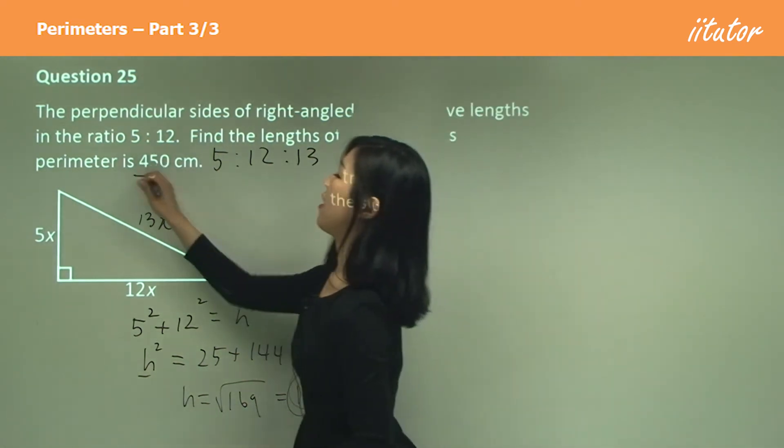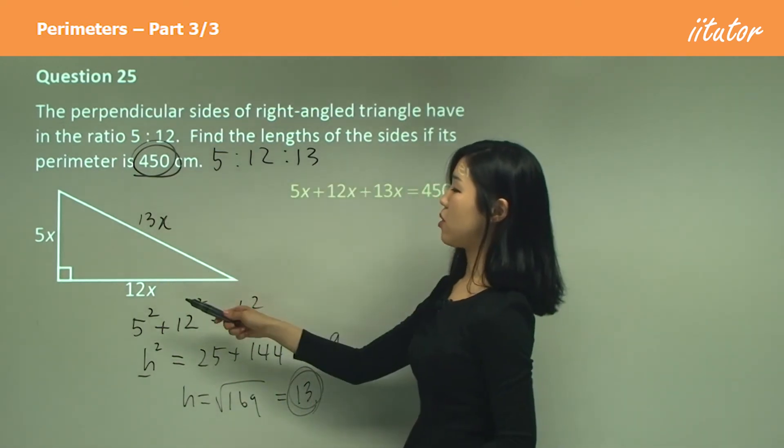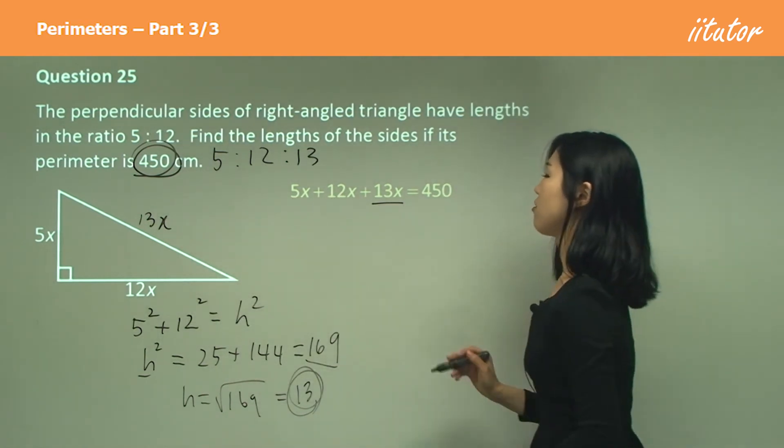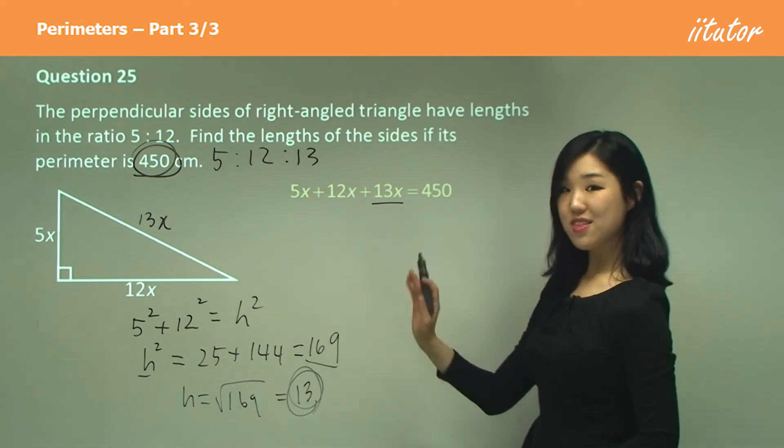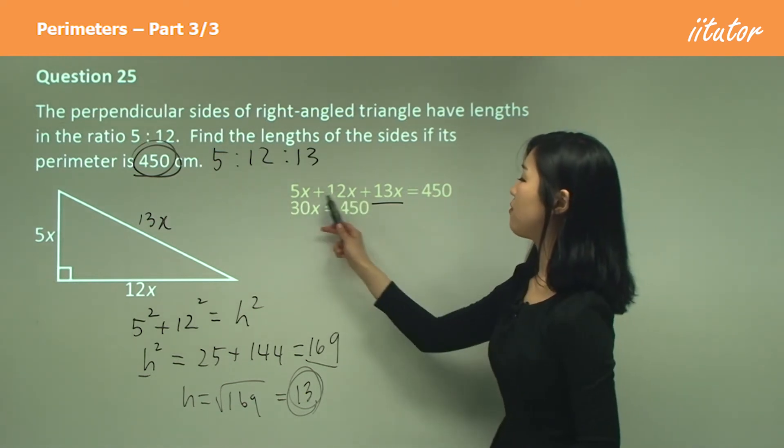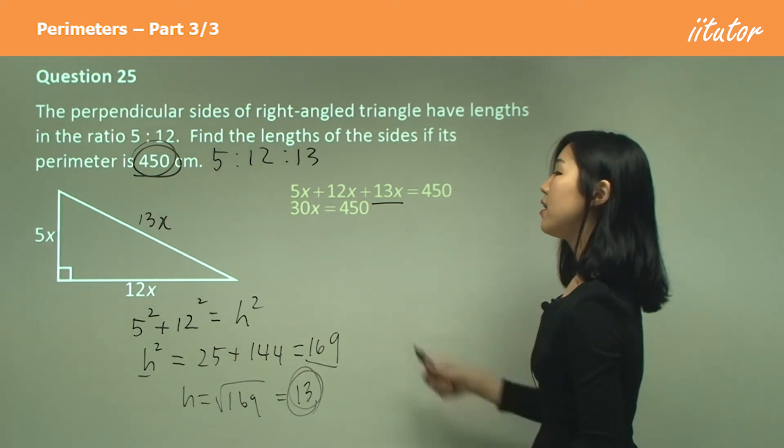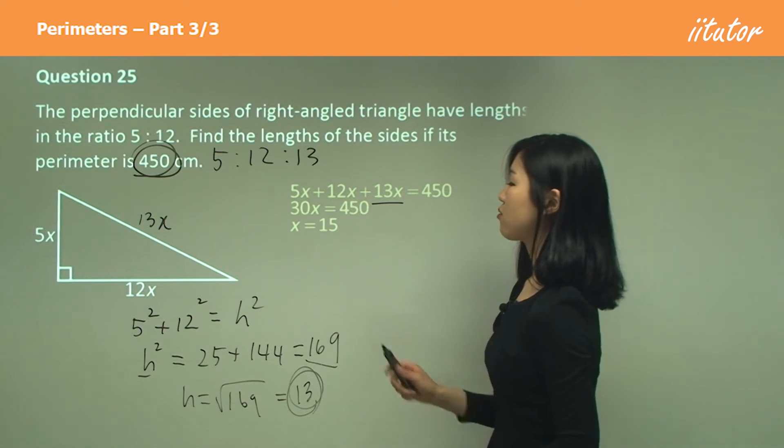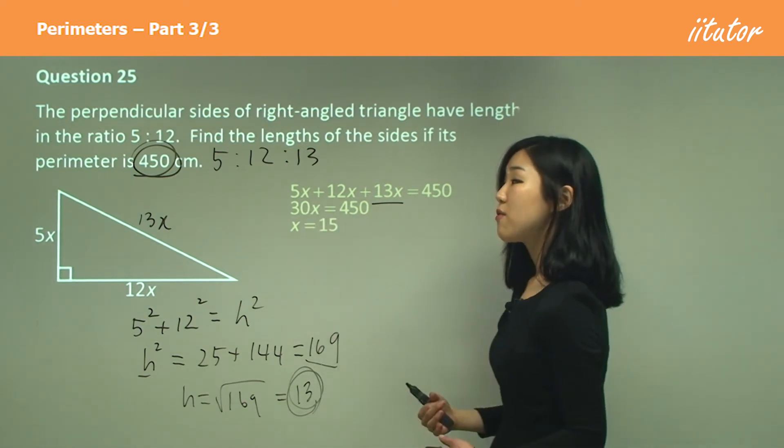Because they give you the perimeter is 450, I'm going to say that 5x plus 12x plus 13x equals 450. These are like terms, so add them up. Add up your coefficients—that's 30. So 30x equals 450. Divide both sides by 30 to get x. So x equals 450 divided by 30, which is 15.